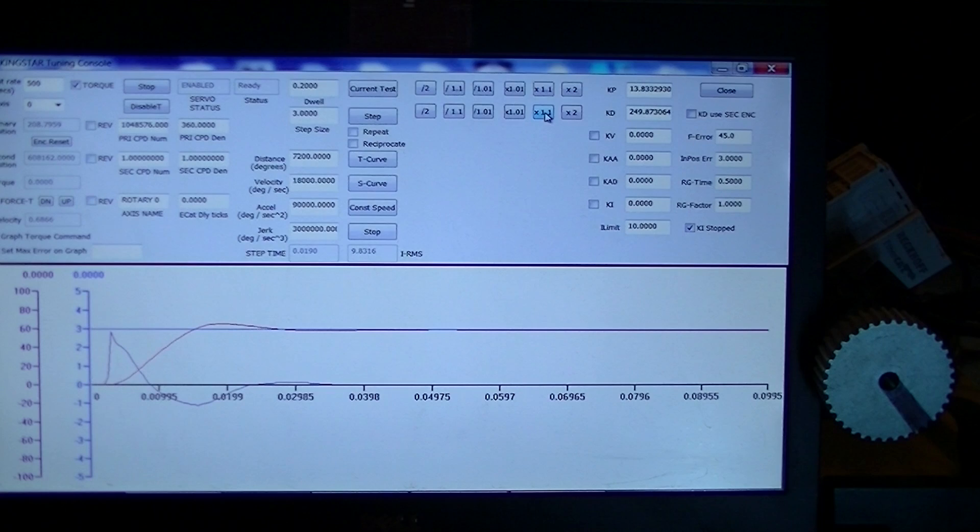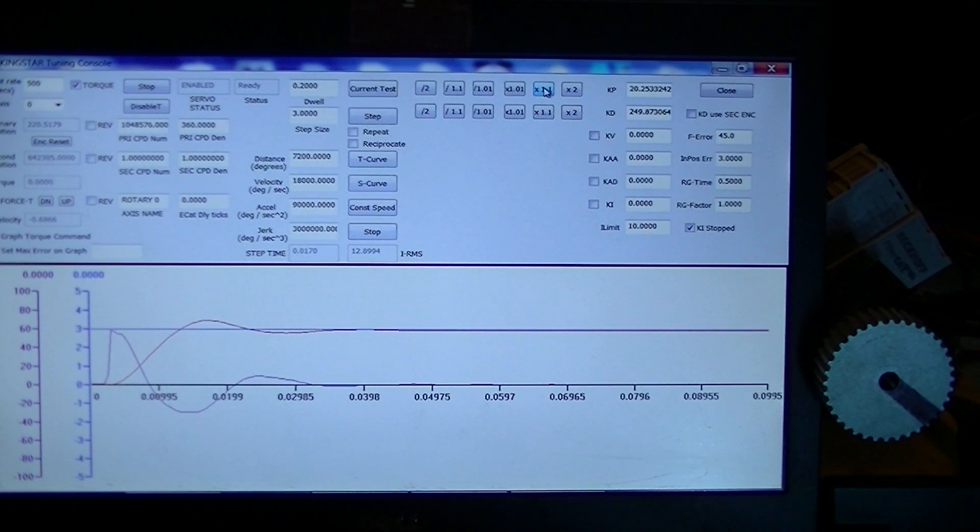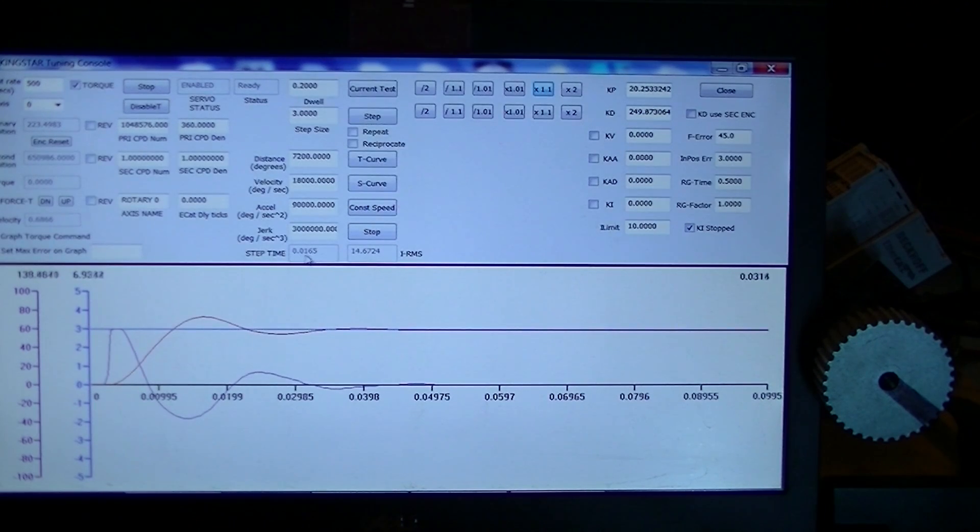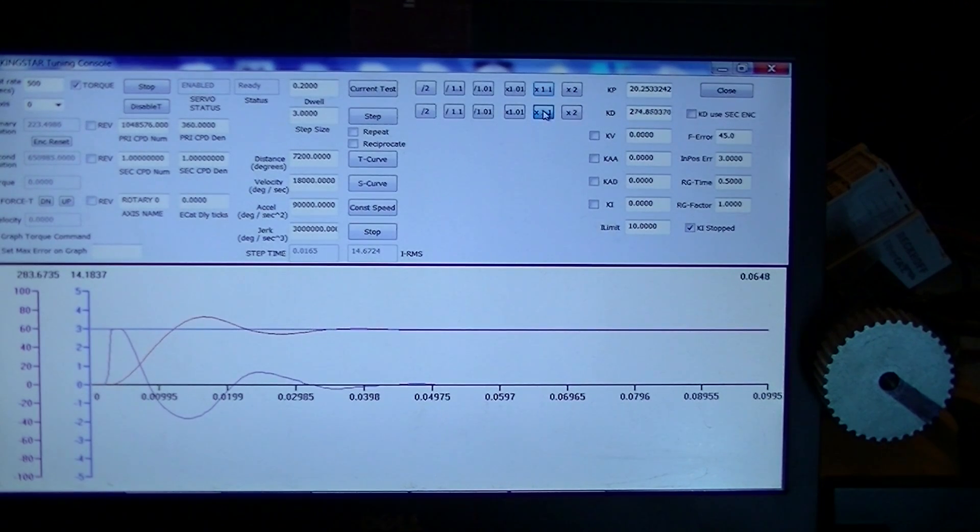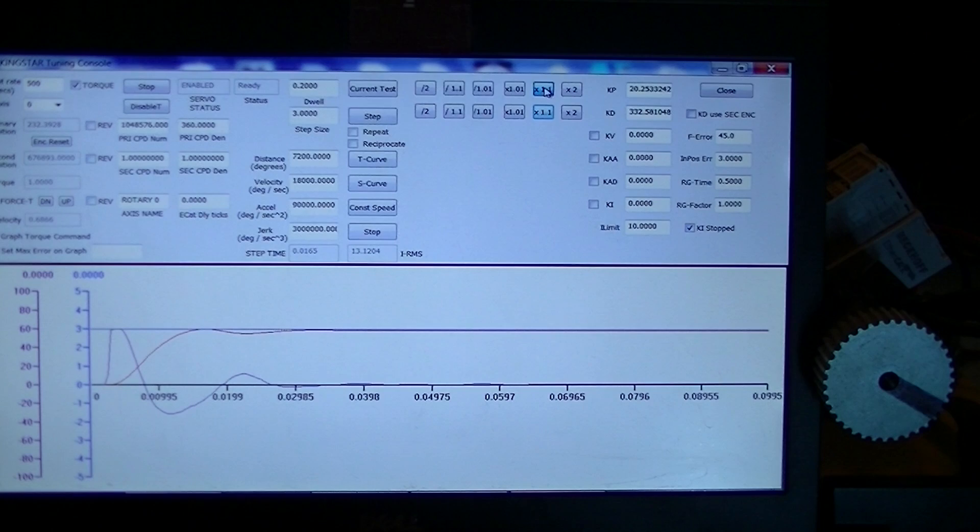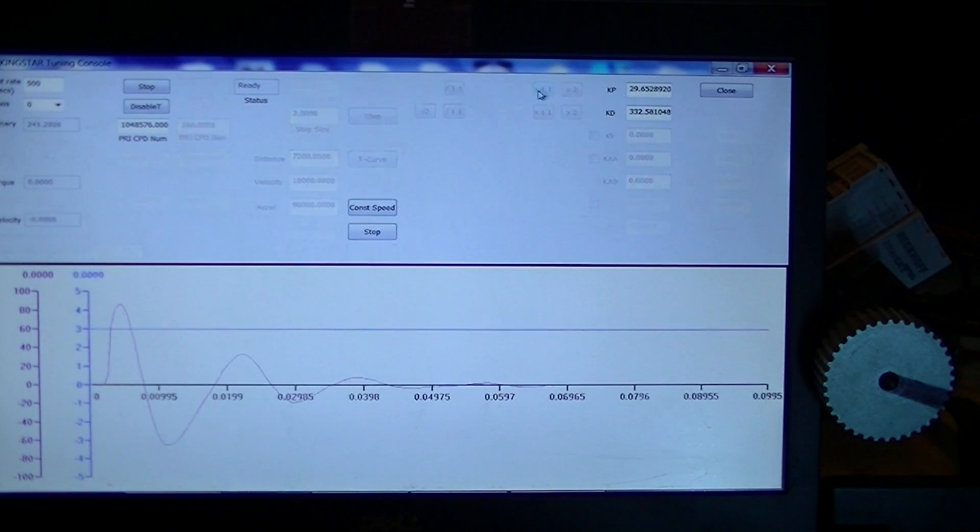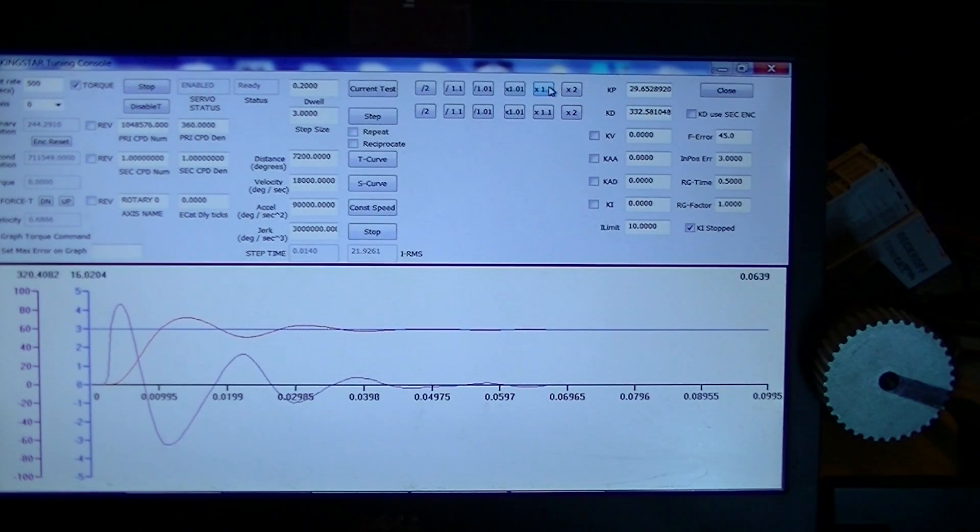Now I will add KD for stability and bring this signal back down. We can do this until we start to lose the smoothness of the signal. Add more KP. We're getting better response. We're sitting here at 16 milliseconds. I'll put some KD on this to bring it back down. We're down to 14 milliseconds.